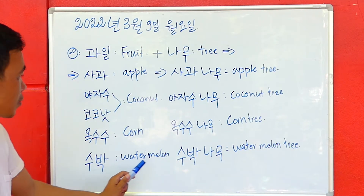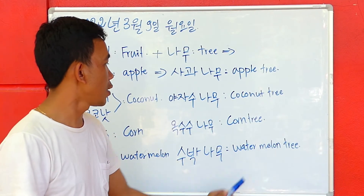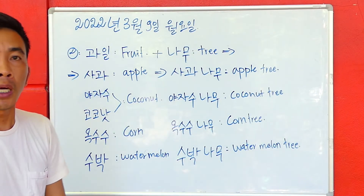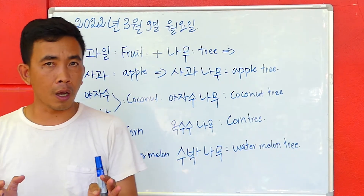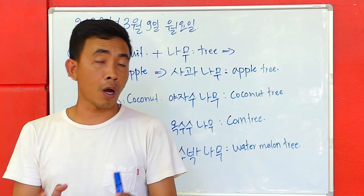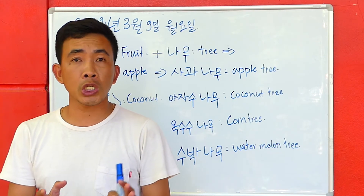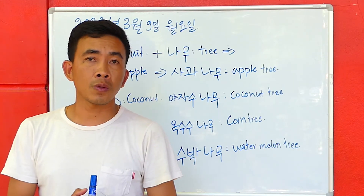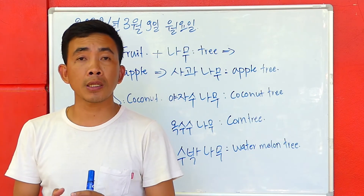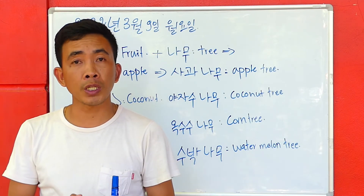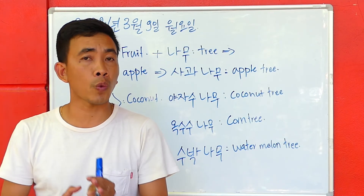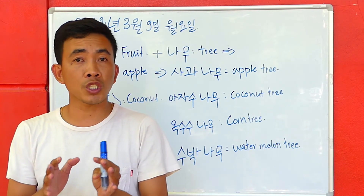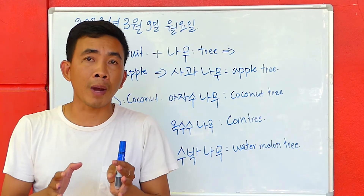Subak — subak namu, like this. Subak namu means watermelon tree, okay. I hope all of you understand what I teach, what I explain today. So if you have any question, anything you want to ask me, you can ask below this video through the comments.